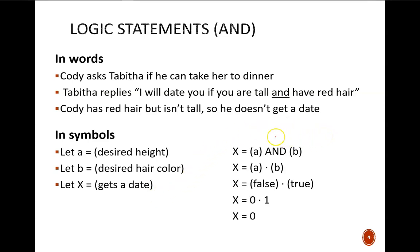Now let's build an equation. Simply take Tabitha's original statement and break it into components that we have symbols for. I will date you becomes x. If becomes this equal sign. You are tall is condition a. Let's leave and as a word for now. Finally, have red hair is condition b. Not surprisingly, there is an algebraic symbol used to represent the AND operation. It is the middle dot.